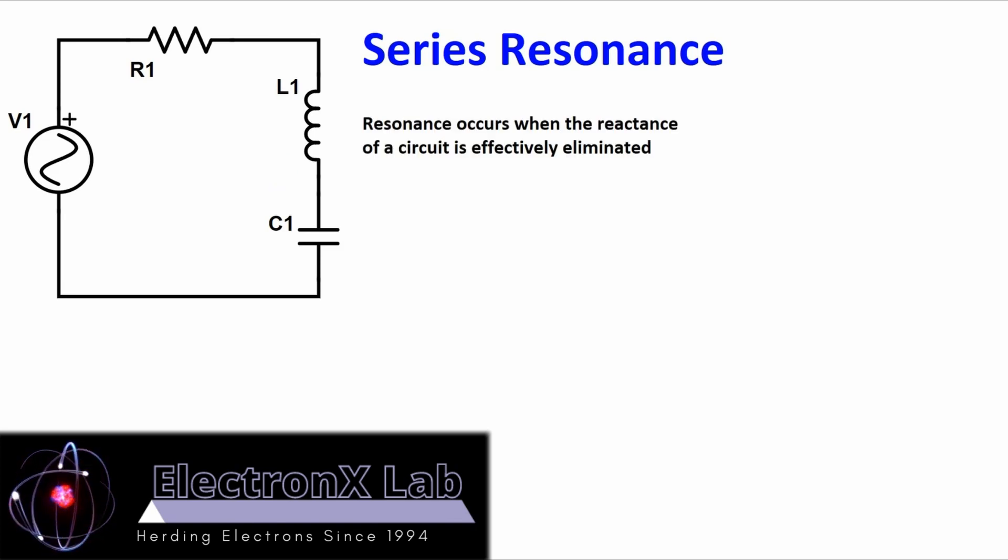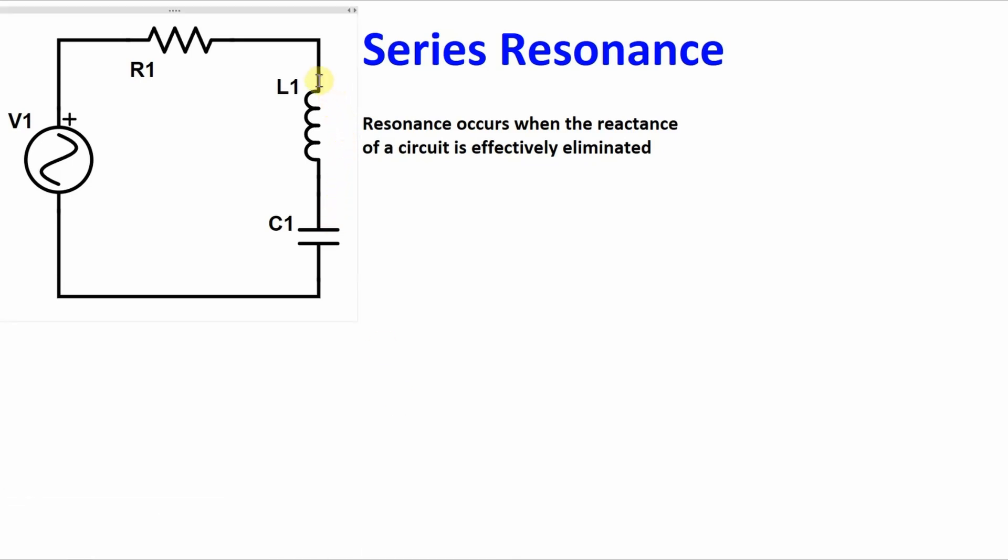Resonance occurs when the reactance of a circuit is effectively eliminated, and it's going to occur at a particular frequency. At that particular frequency, the effects of the capacitor and inductor cancel each other out. Now let's take a look and see how that could happen.